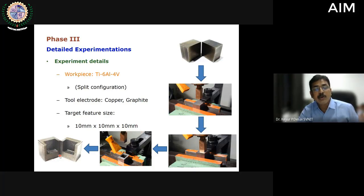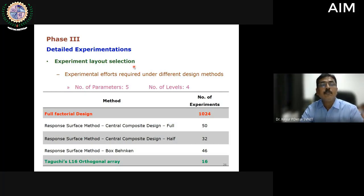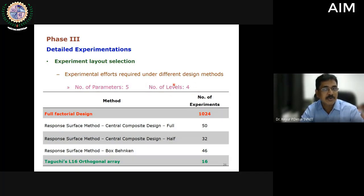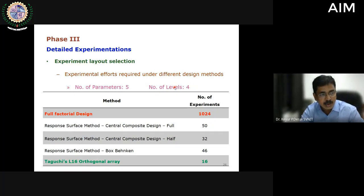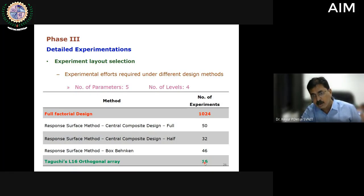After machining, you can take both halves apart and carry out measurement of surface roughness on the bottom as well as on the sides. For detailed experimentation, we had five parameters each with four different values. Going for a full factorial design would demand 1,024 experiments, which was beyond scope, so we went for the Taguchi approach using an L16 array with 16 experiments, followed by confirmation tests.